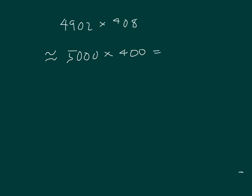Equals 5 zeros. And then 5 times 4 is 20. Place some commas. My estimated product is 2 million.